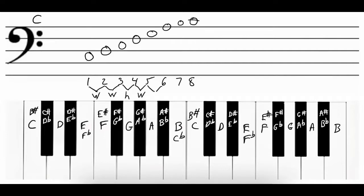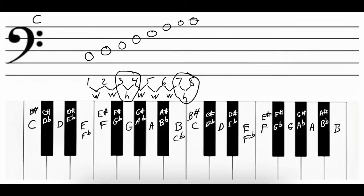The interval between the fifth and the sixth note, G and A, is a whole step. The interval between the sixth and the seventh notes, A and B, is a whole step, and the interval between the seventh and the eighth note, B and C, is a half step because they're right next to each other. The two places that have half steps in the C major scale are between the third and the fourth note, and the seventh and the eighth note.